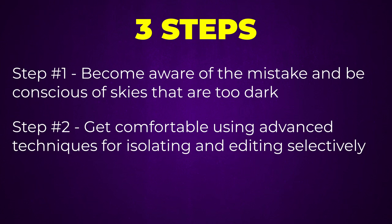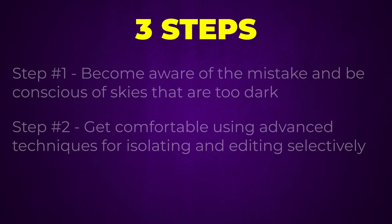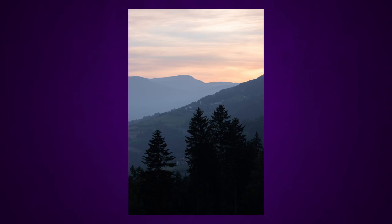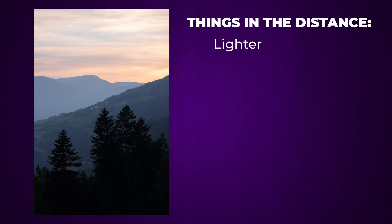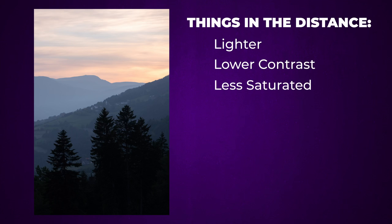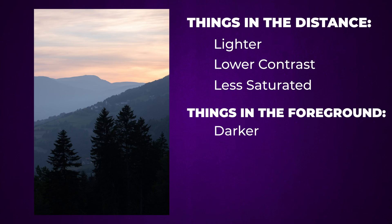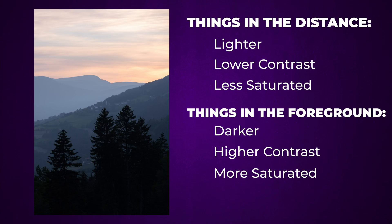Once you're comfortable using luminosity masking to pick out different things and edit them by different amounts to enhance image depth, the only question left is what edits should you make to which things and why? The good news is you don't need to remember a long list of techniques. It can all be summed up by one simple guideline: things in the distance tend to be lighter, lower contrast, and less saturated, and things in the foreground tend to be the opposite — darker, higher contrast, and more saturated. Keep those rules in mind and let them drive your editing decisions, and to get up to speed with luminosity masking so you can make these selective edits with ultimate precision, watch the next video.